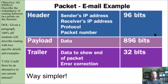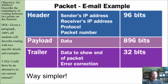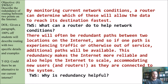Here's a much simpler diagram to wrap your mind around what's being sent through these routers. You have a header, you have a payload, and a trailer. By monitoring current network conditions, a router can determine which path will allow the data to reach its destination fastest.